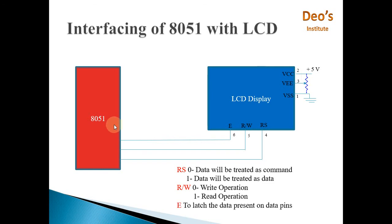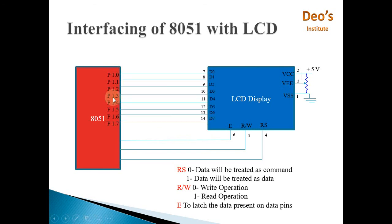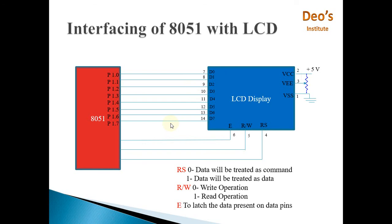Then you have the 8 data pins D0 to D7. The 8 pins on port P1.0 to P1.7 of the 8051 are connected to these 8 data pins on the LCD. Using these pins, data can be sent from the 8051 microcontroller to the LCD. In some cases only 4 data lines can be used, but if required, all 8 data pins are available to send data from the 8051 to the LCD.